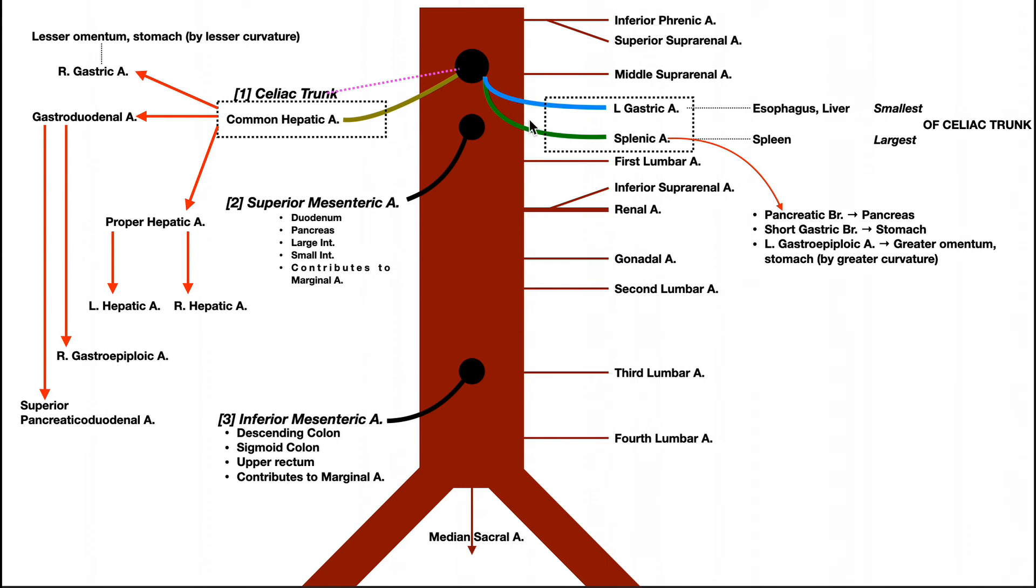So here's our abdominal aorta. This was a video where we talked about all the branches that come off of there. And so here's our abdominal aorta descending downward and it bifurcates into two major branches. This one over here would be the patient's right common iliac artery. This one over here is the patient's left common iliac artery.